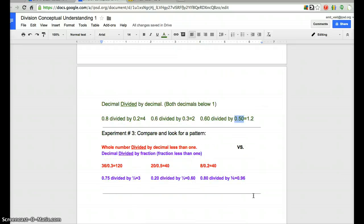So let's go to the last experiment here. Experiment number 3: Compare and look for a pattern. In this case, I took a whole number in the red font and divided it by a decimal that's less than 1, like I did before. 36 divided by 3 tenths is 120. 20 divided by half is a quotient of 40. 8 divided by 2 tenths gives you the quotient of 40 as well. As you're watching this and listening to me, I think some of you are starting to realize something or make discoveries about division, multiplication, fractions, and decimals.